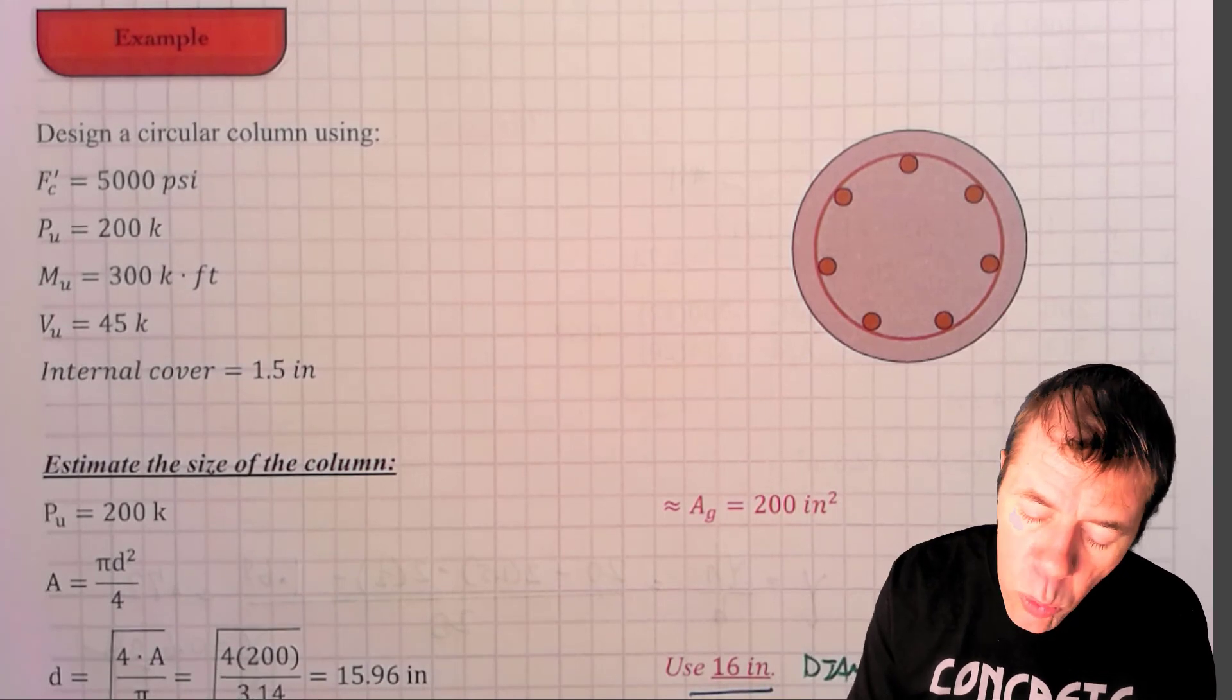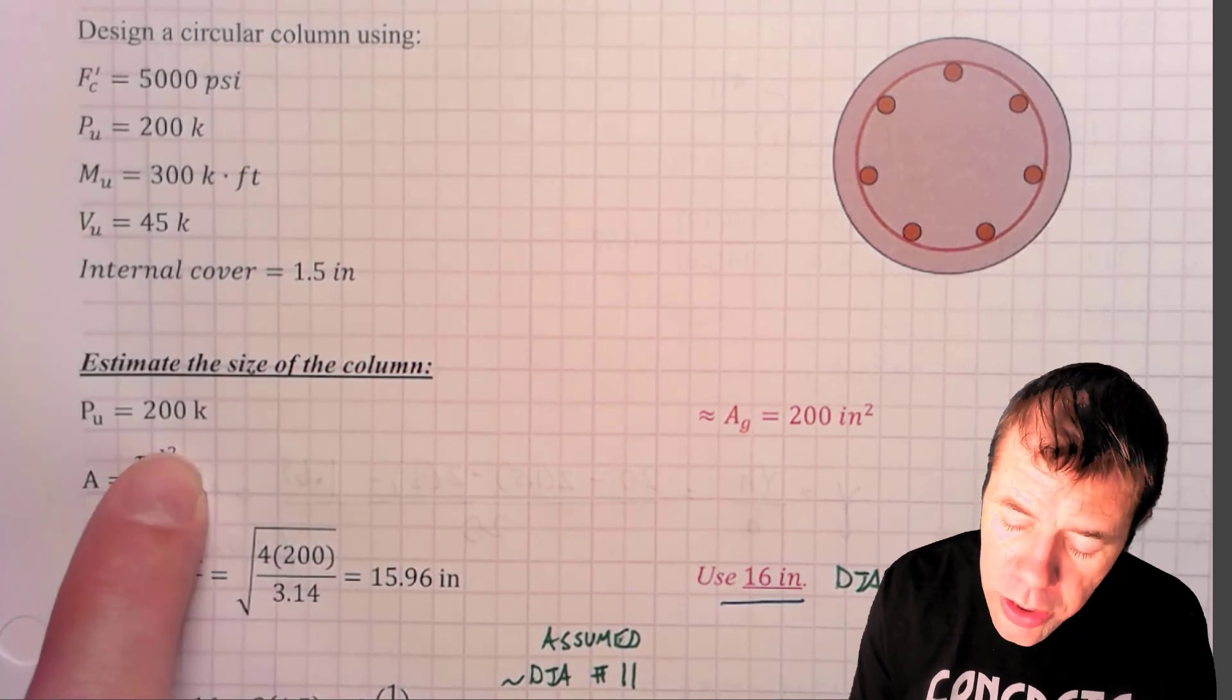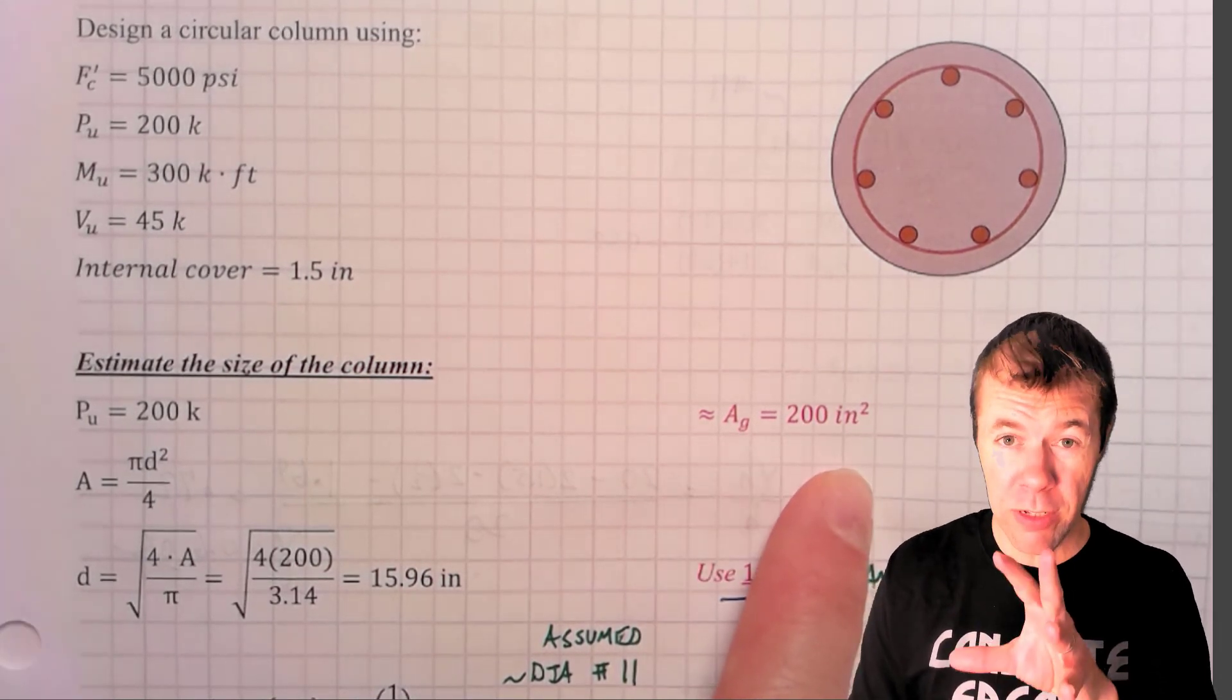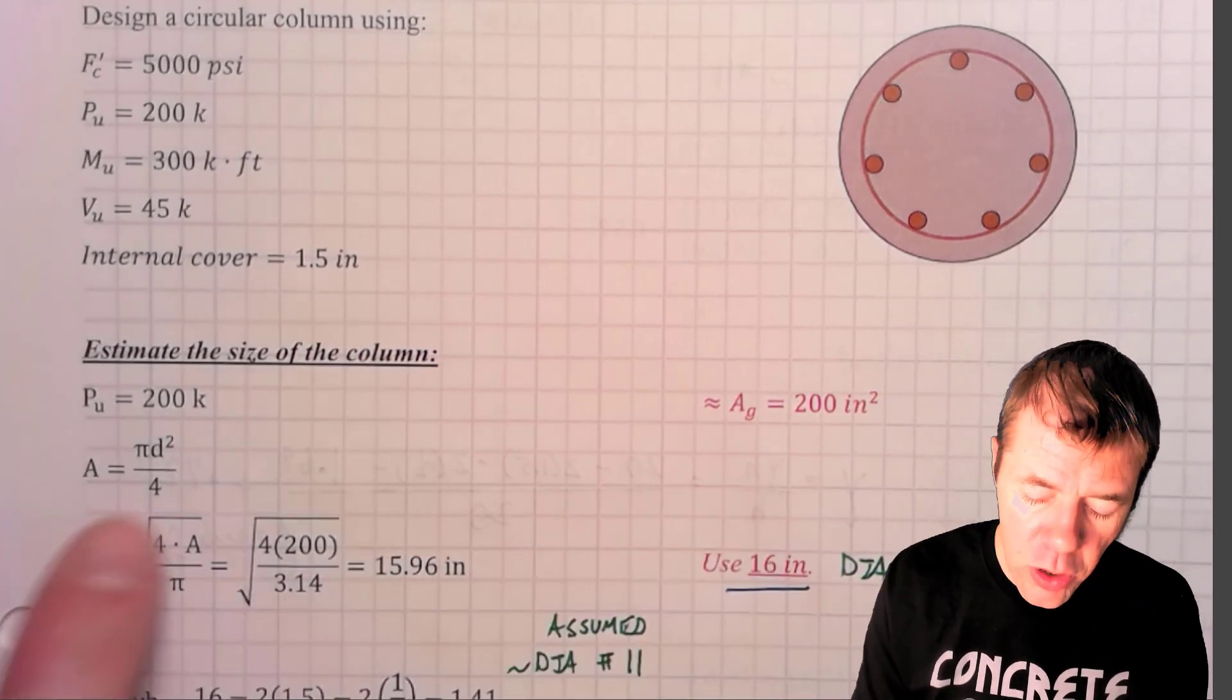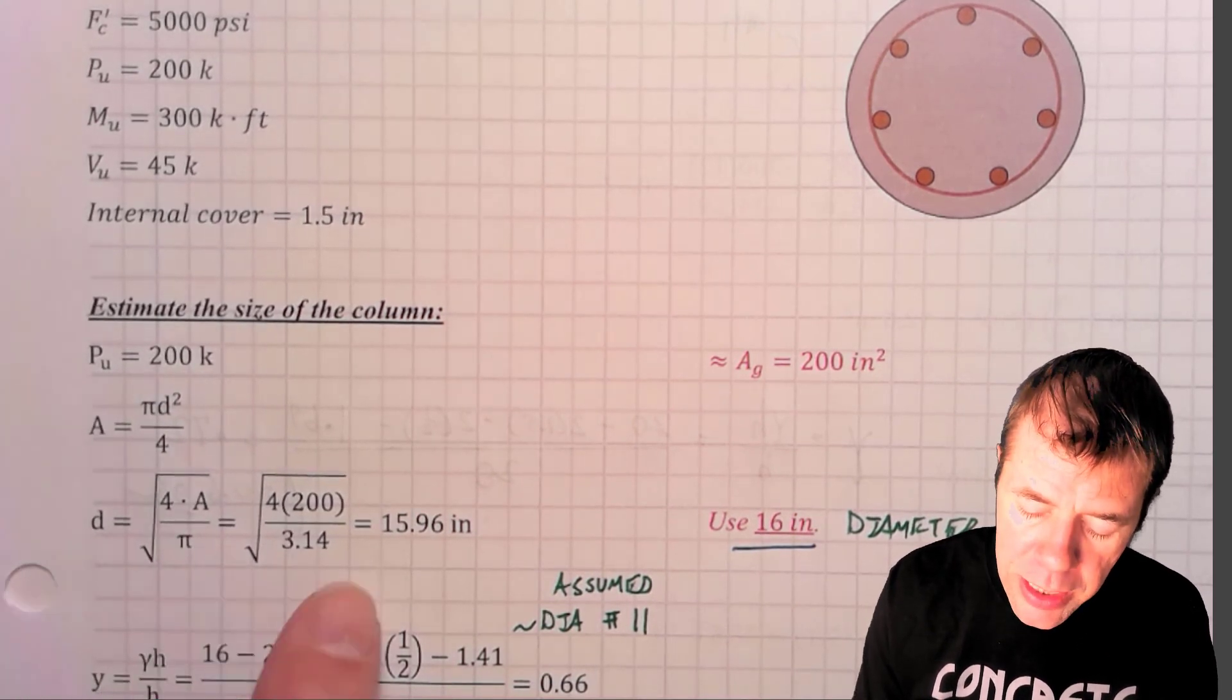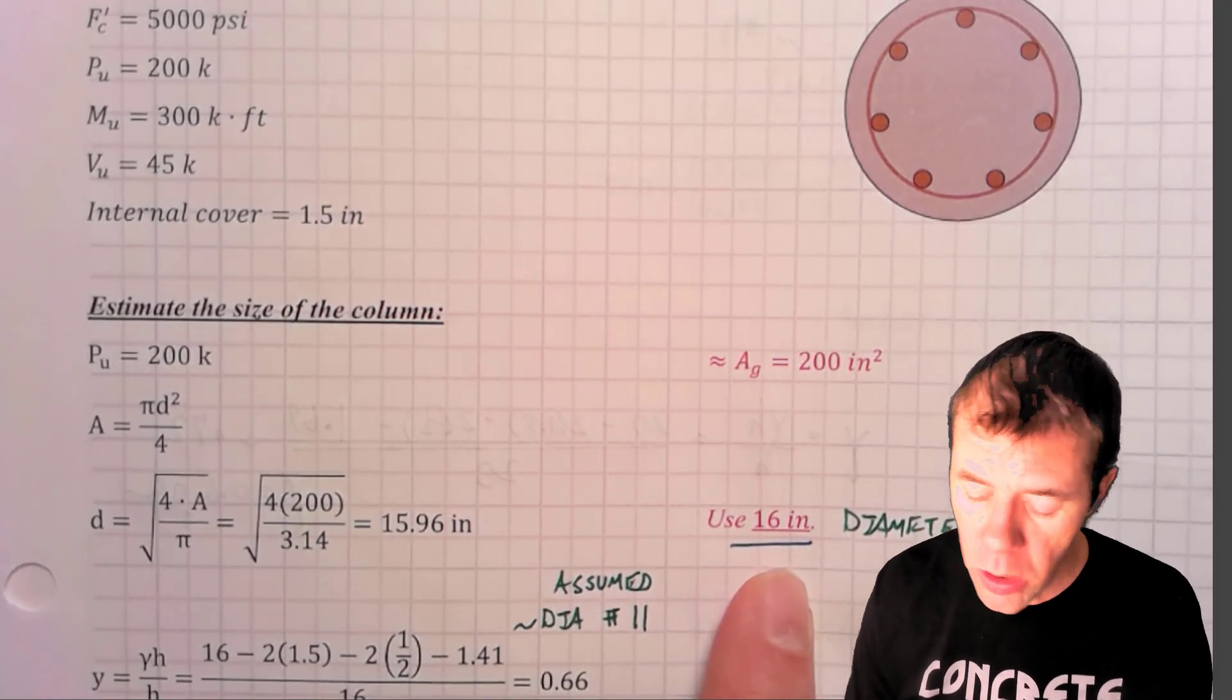We start out estimating the size of the column by using our axial load, which is 200 kips. 200 kips is about what we're going to say is what our area needs to be in square inches. If you don't know where it comes from, there's a previous video that explains this super cool trick. The area of a column is pi d squared over 4. My diameter would therefore be square root of 4A over pi. That would be plug in here and get 15.96. I'm going to use 16 inches as the first guess for the diameter of my column.